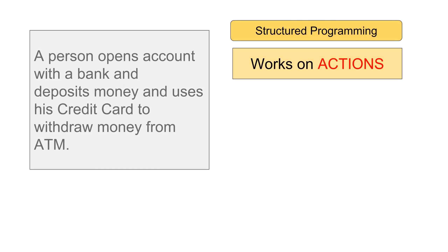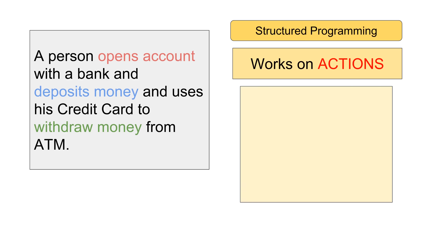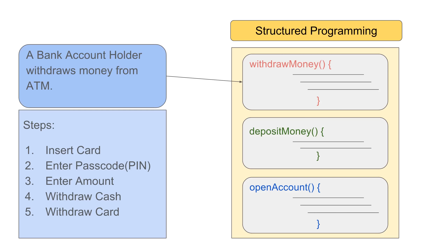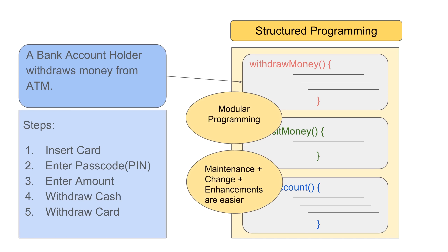Another important thing to understand is that structured programming works on actions. Take this example: a person opens an account with a bank, deposits money, and uses his credit card to withdraw money from the ATM. The actions or verbs here are: open account, deposit money, and withdraw money. A developer will create modules based on these actions — a module for open account, a module for deposit money, and a module for withdraw money. The programming is very modular with separate structures, making maintenance and changes much easier. Languages like C and Pascal use this.